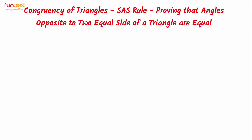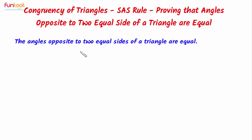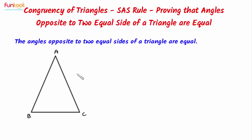Let's discuss the theorem and its proof. The statement of the theorem is: the angles opposite to two equal sides of a triangle are equal. Here we have triangle ABC in which AB is equal to AC, and we have to prove that angle ABC, that means this angle, is equal to angle ACB.